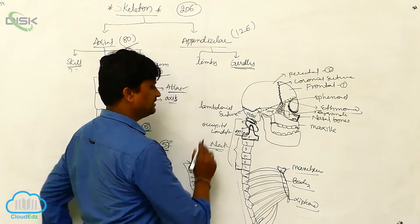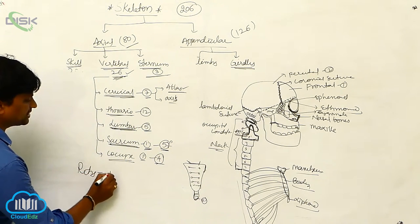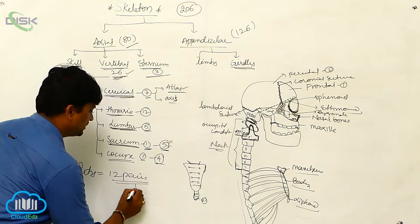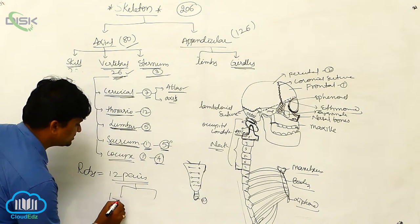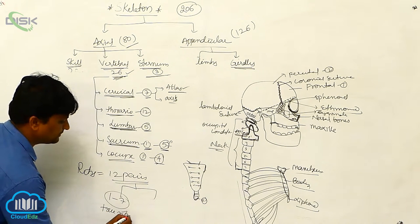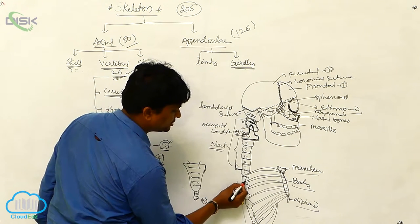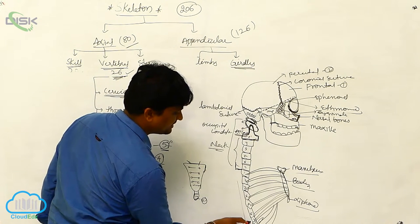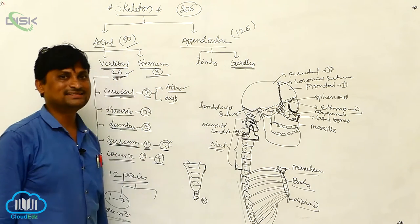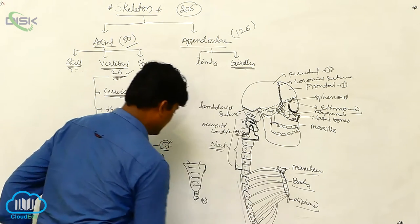There are 12 pairs of ribs. Out of these 12 pairs, ribs one through seven are considered true ribs — also called sternal ribs — because they are completely and directly attached to the sternum.